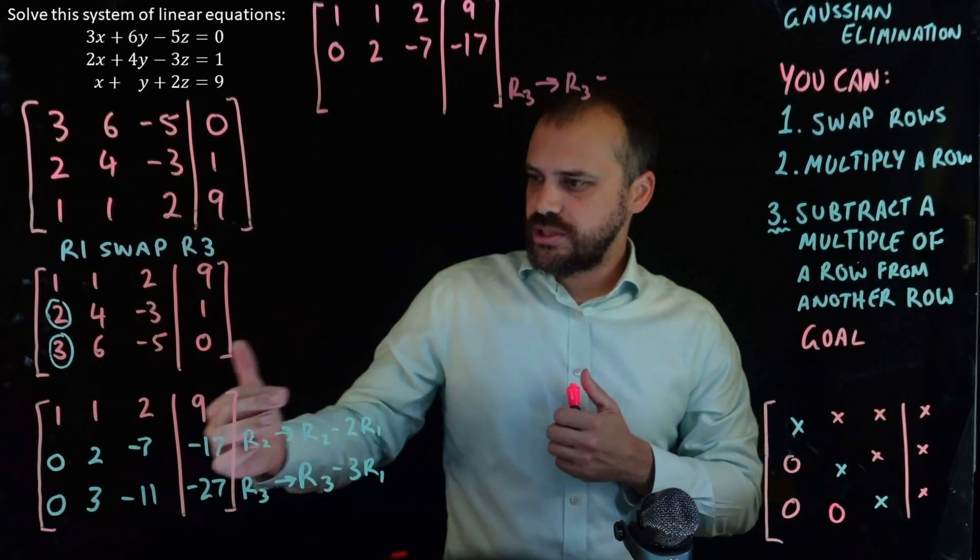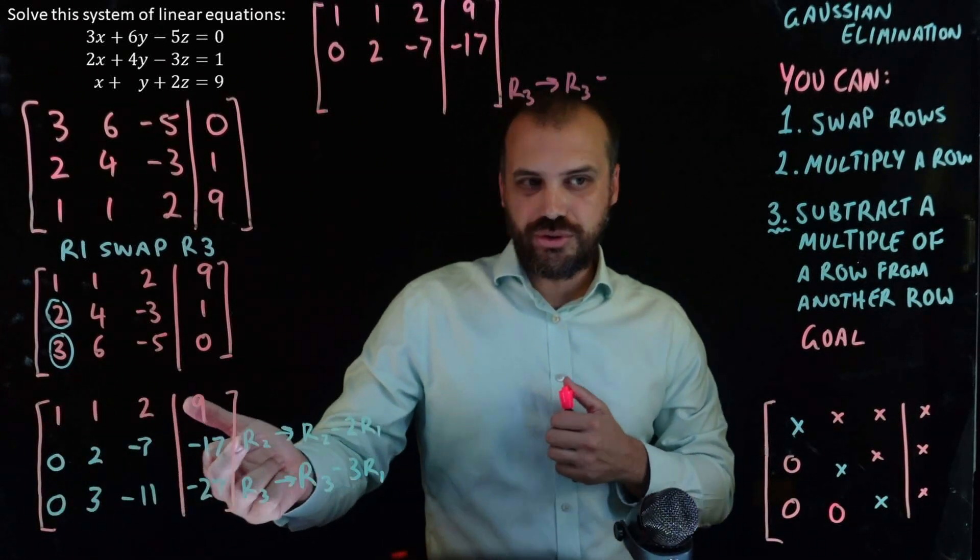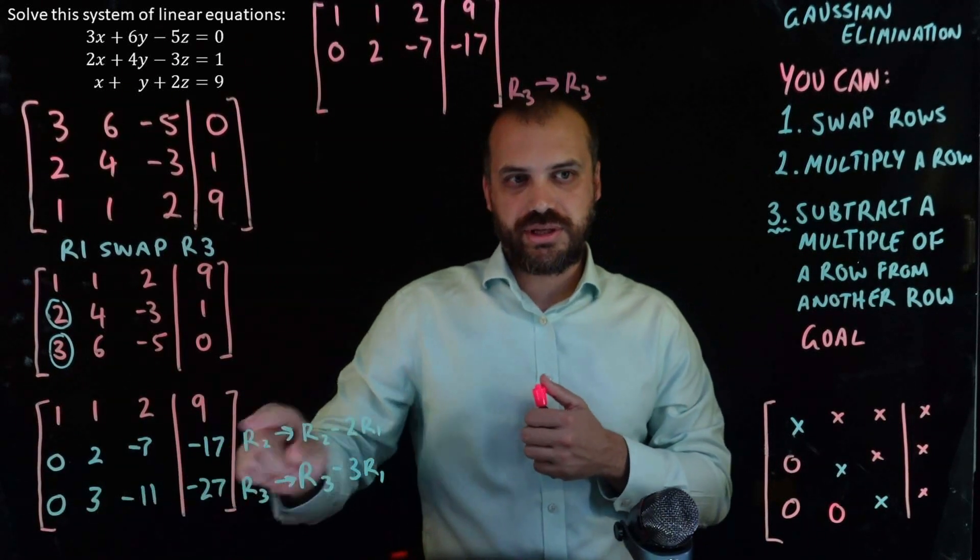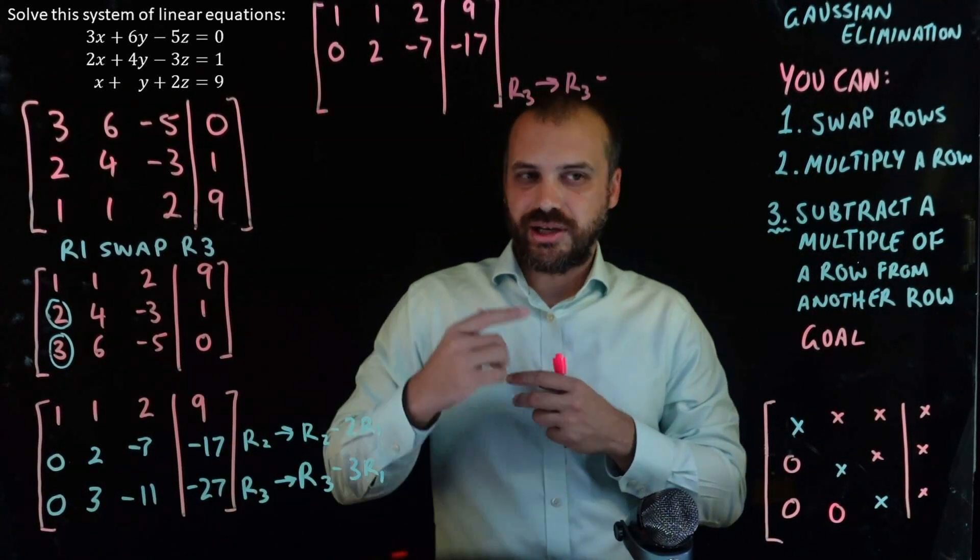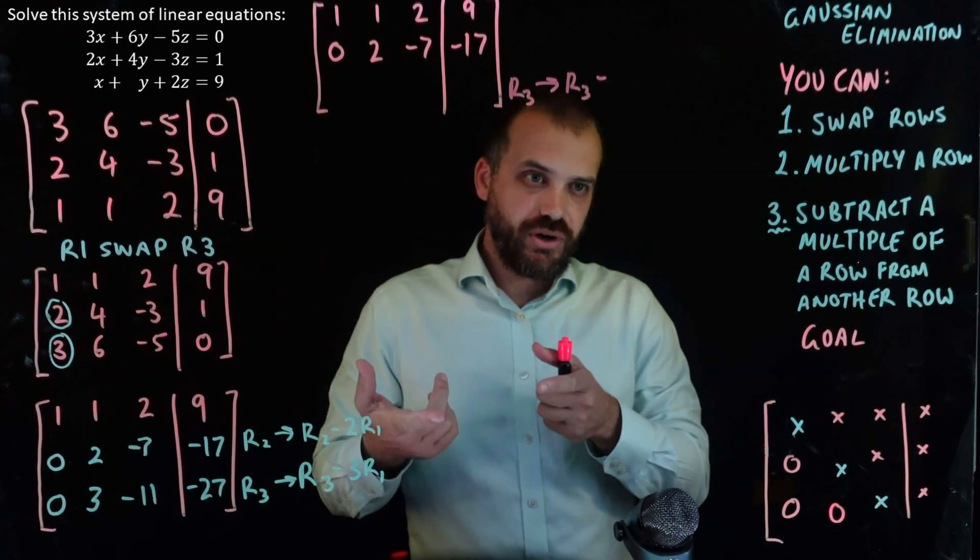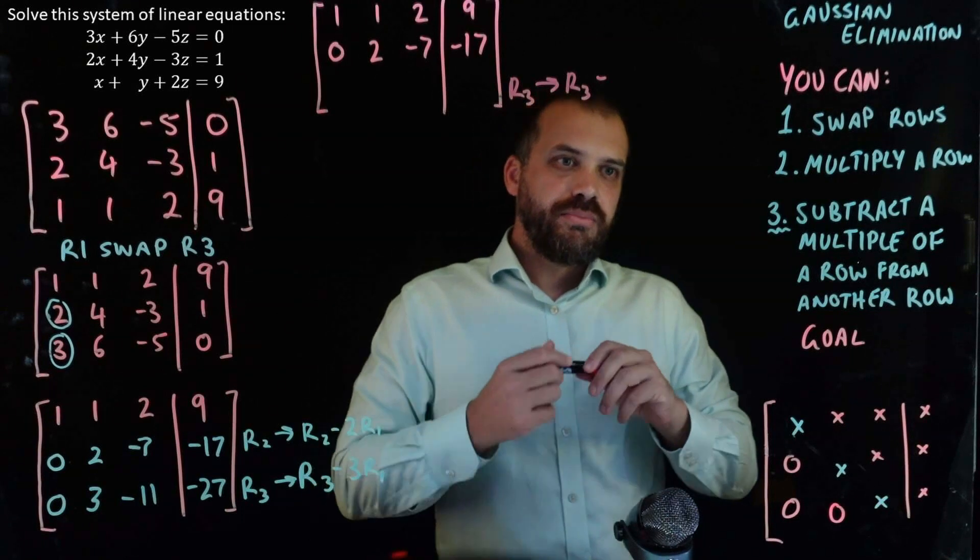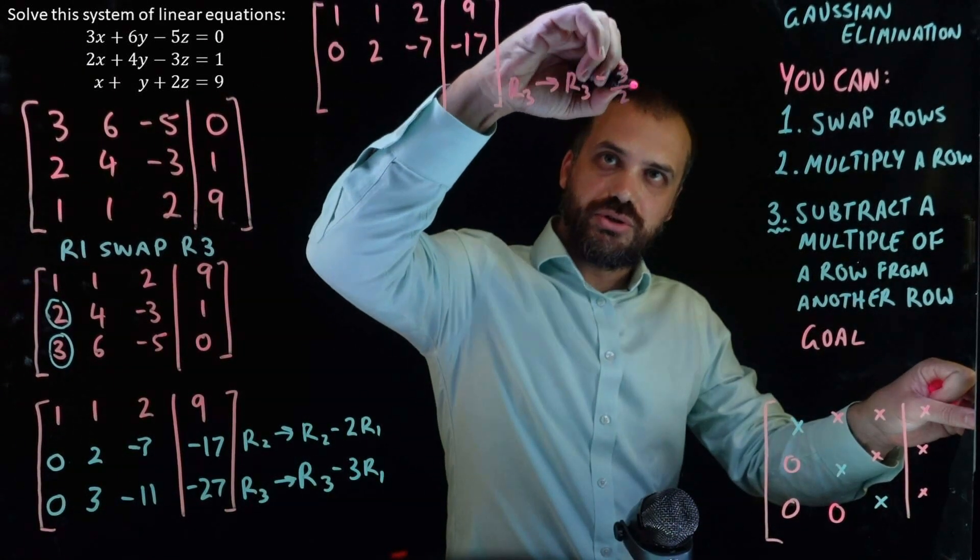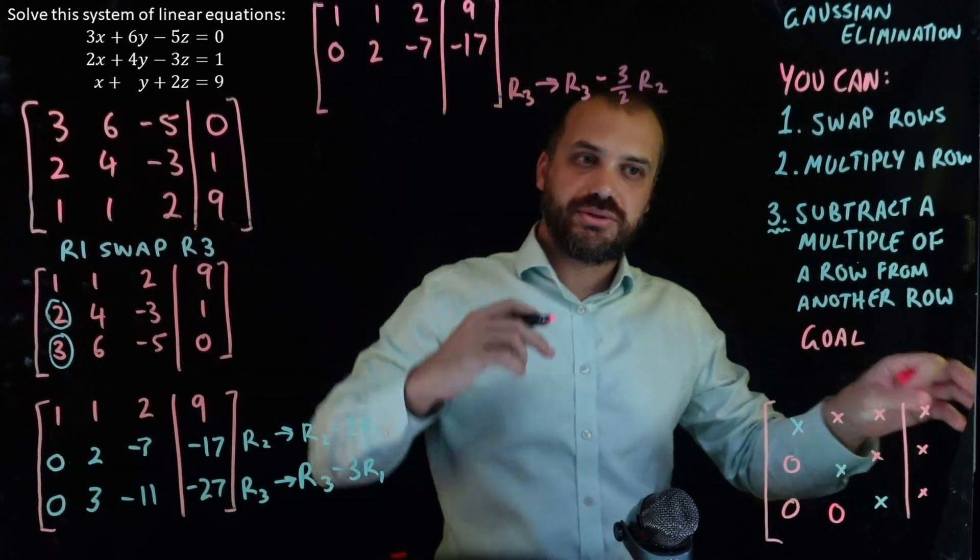Okay, what do I need to multiply row two by to cancel out that three? Okay, it's pretty ugly. I need to multiply it by 1.5. Two times 1.5 is three. So, multiplying it by 1.5 or three over two are two.